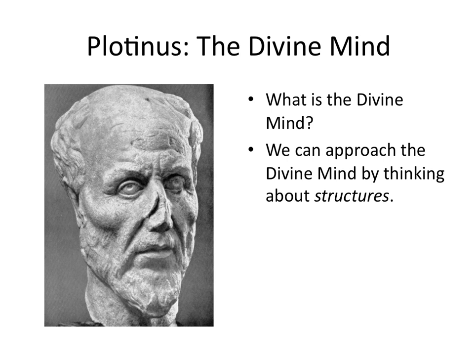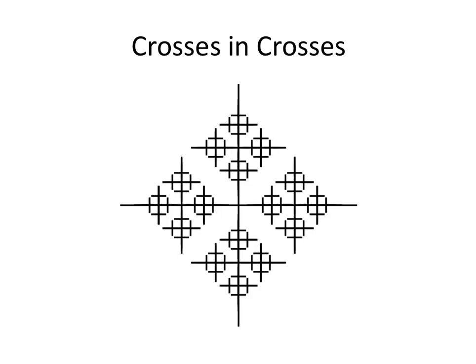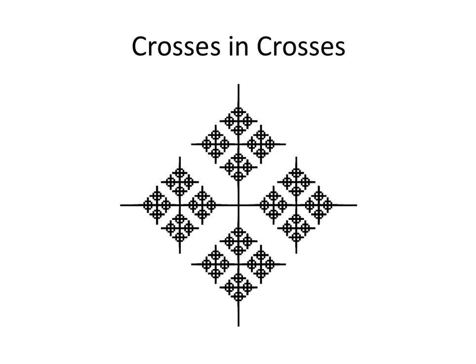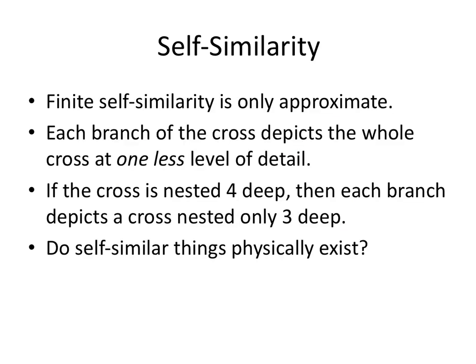We can approach the Divine Mind by thinking about structures. Let's start with a simple structure of a cross — two lines crossing each other — and we'll make crosses in crosses by crossing the lines again and again. Down to three levels of crossing, a fourth level of crossing, and you'll notice that this pattern has self-similarity. The part circled in red is similar to the whole circled in blue. This is self-similarity — finite self-similarity because we're only talking about finite structures and it's only approximate.